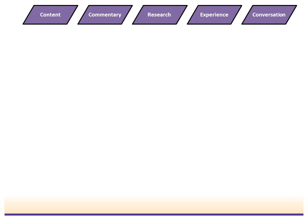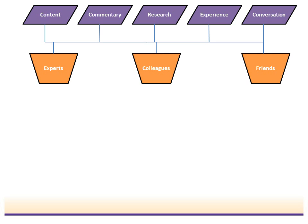Let's take a look at the framework of a personal learning network. You have the inputs — the places where you get information: content, commentary, research, experience, conversation. All of that is part of the information and learning you get from your network. But the core of your personal learning network is the people: experts, colleagues, friends — whoever you choose to connect with. The reason they are the core and foundation is because they help you filter and find this information.